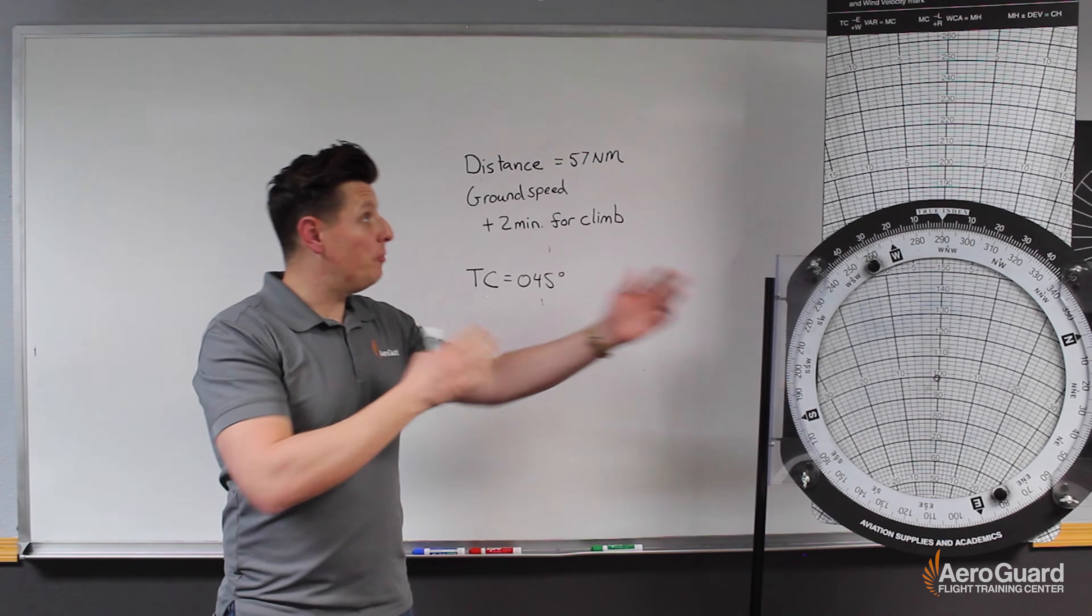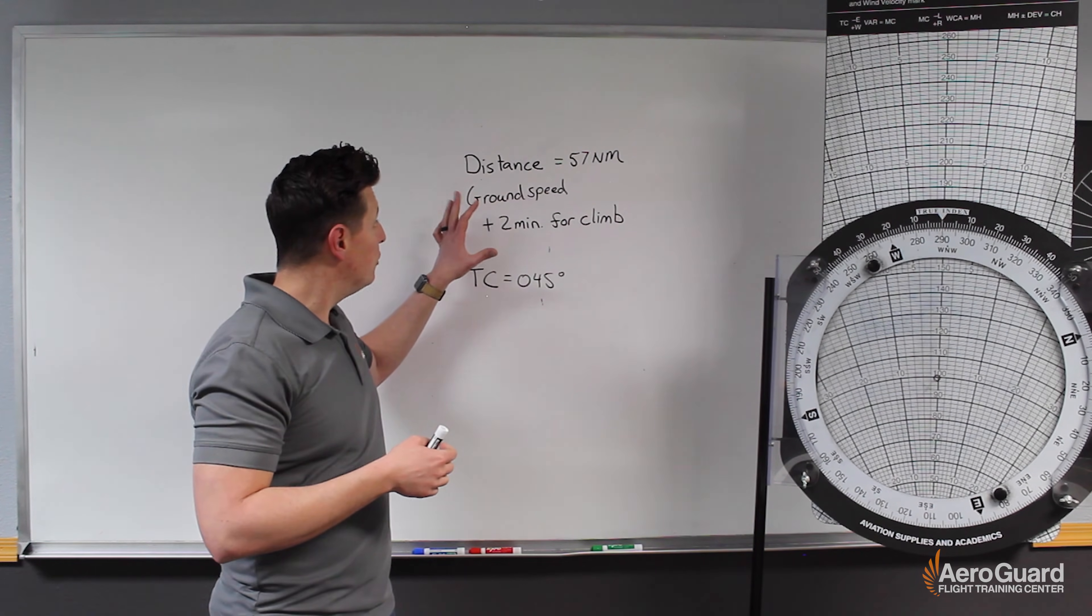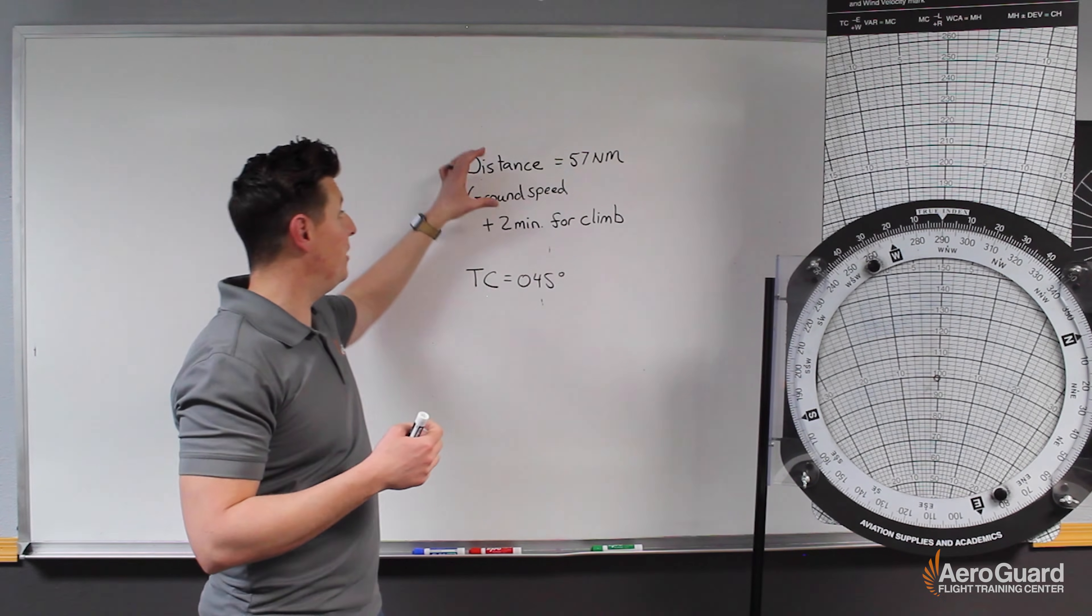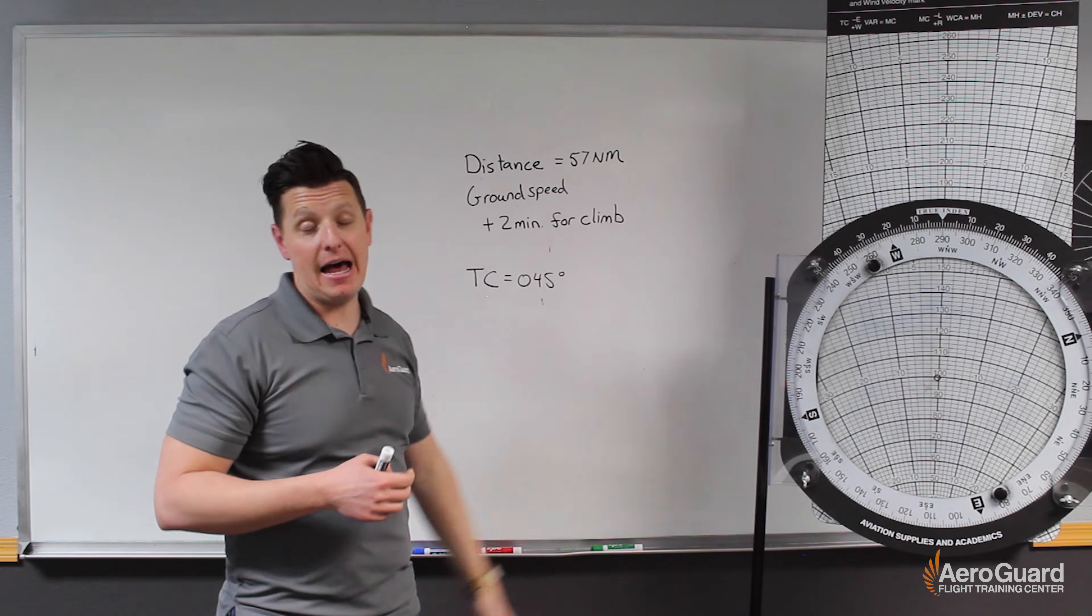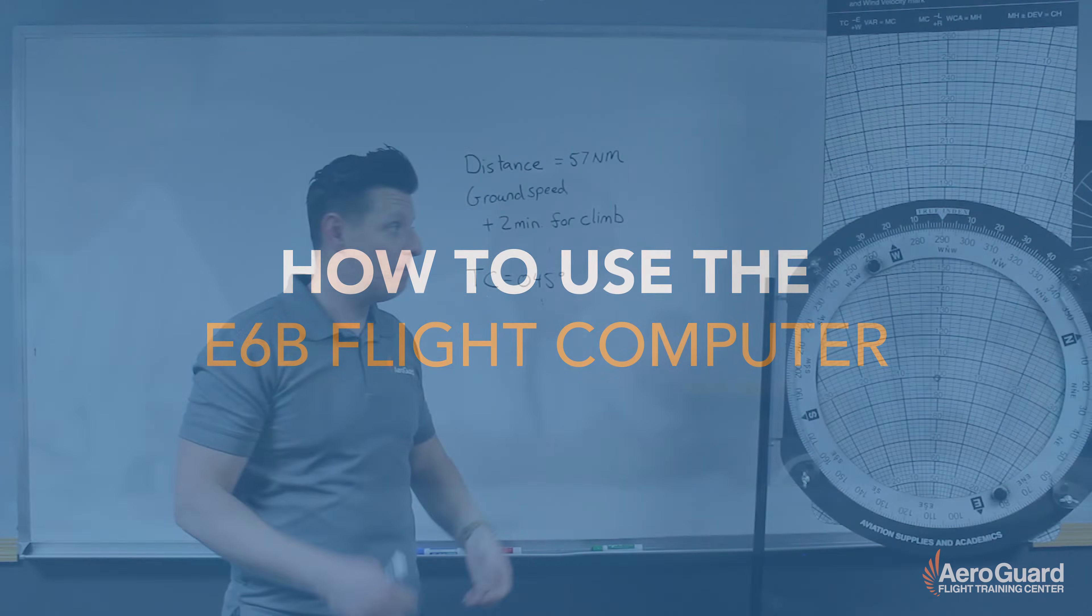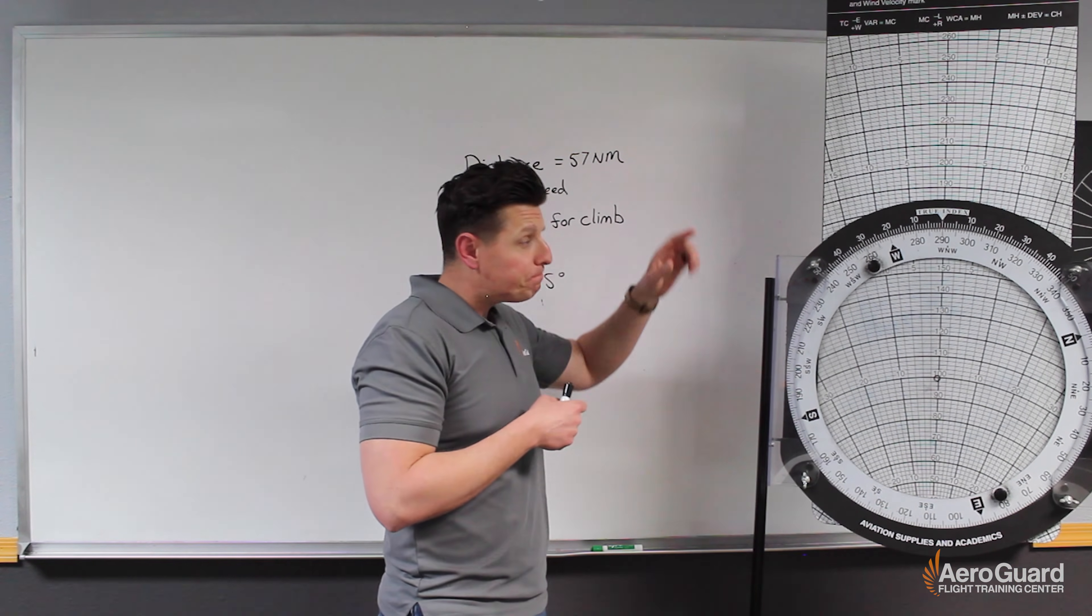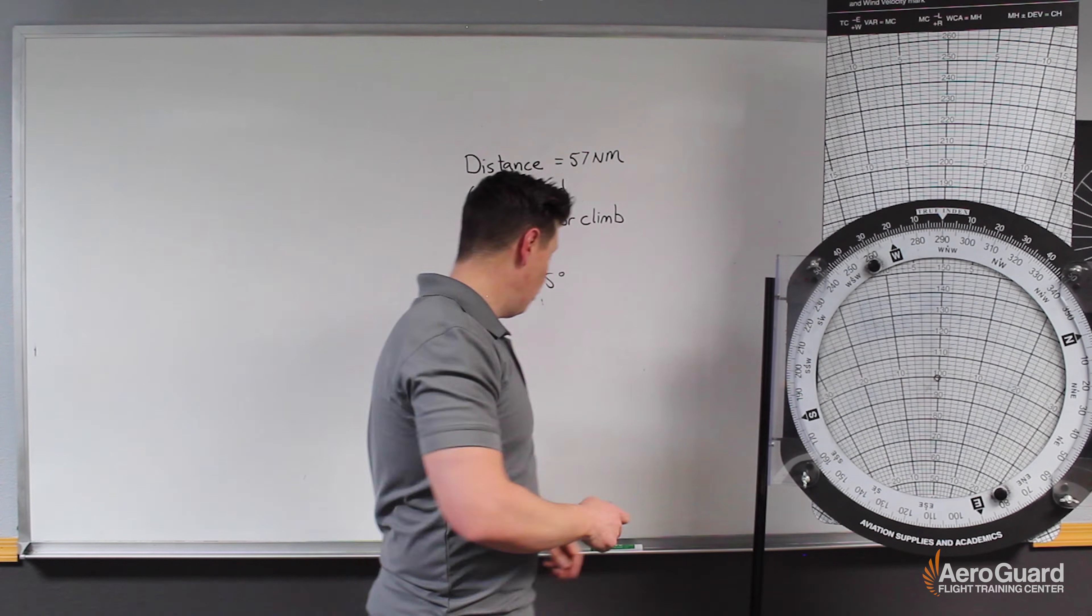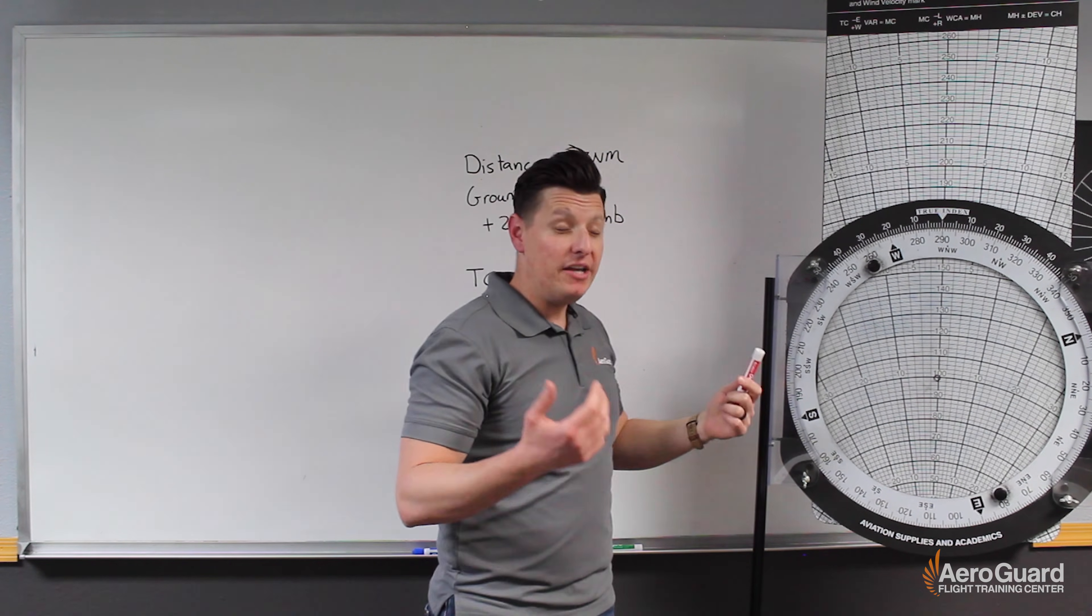Now we'll jump over to the E6B and correct for the wind to ultimately determine what our ground speed will be. Then we'll be able to calculate what that time in route will be and add our two minutes and be good to go. So step one jumping over to the E6B we're going to follow the normal steps. The first thing we're going to need to do is mark our wind dot.